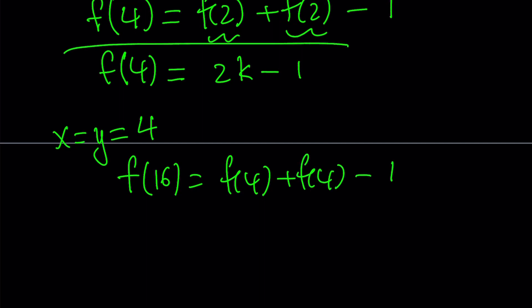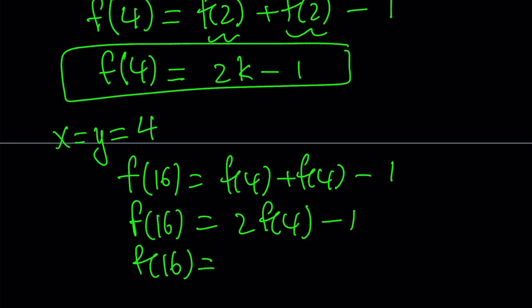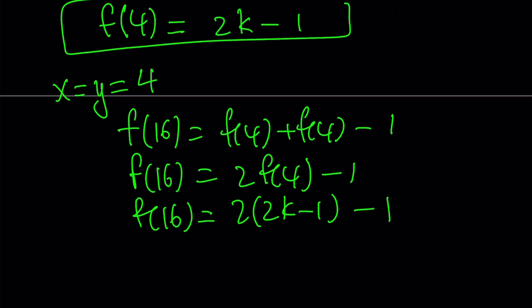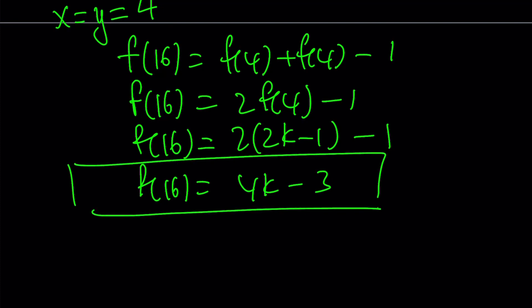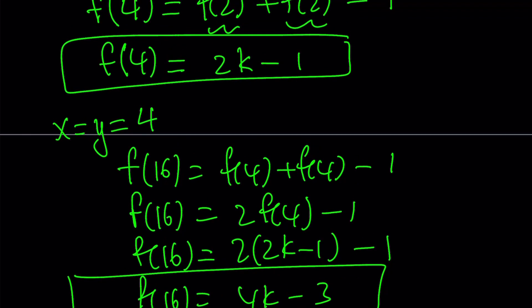Now, f of 4 is already known in terms of k, so I can go ahead and substitute because now this can be written as 2 times f of 4 minus 1. And now f of 16 can be written as 2 times 2k minus 1 minus 1. So from here we get 4k minus 2 minus 1, which is 4k minus 3. And that's going to give us the value of f of 16. So we found the answer in terms of k, which is cool.